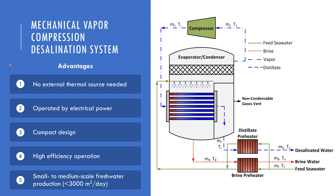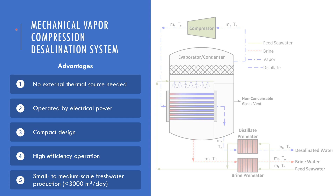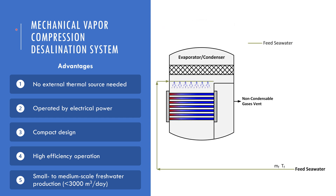The mechanical vapor compression desalination system, or MVC for short, shown here on the right, offers several advantages over other thermal desalination processes. The first step in this process is to pump the feed seawater to the spraying headers. Inside this heat exchanger, called a horizontal tube falling film evaporator, the sprayed seawater forms a falling film that trickles down the tube bundle, absorbing thermal energy and partially vaporizing. The formed vapor rises, passing through the mesh and out of the evaporator. The sprayed seawater that did not vaporize falls to the brine basin at the bottom of the evaporator to be discharged from the system.